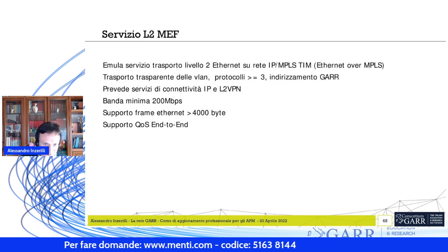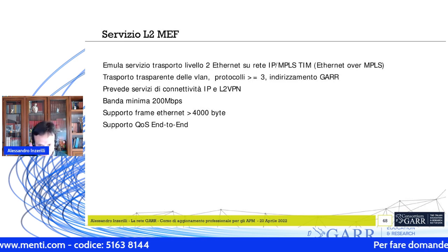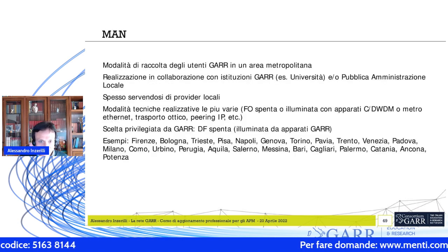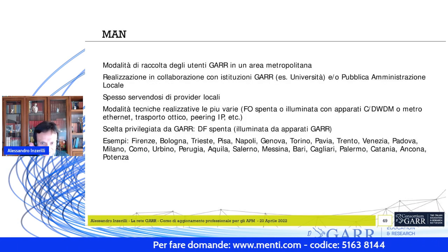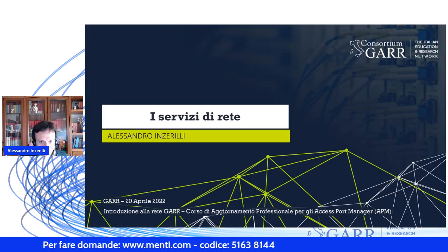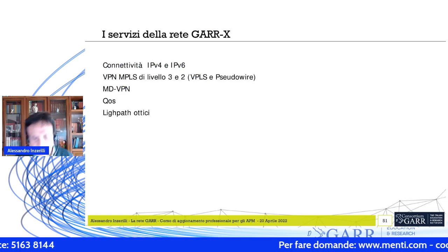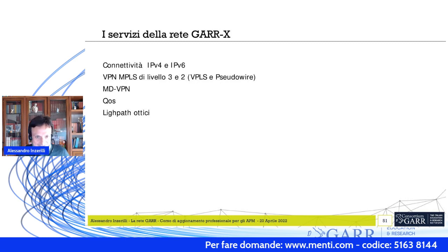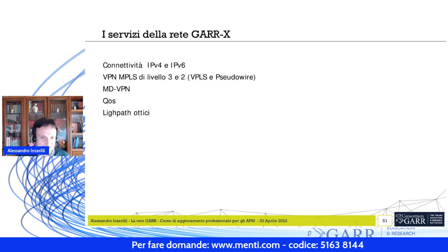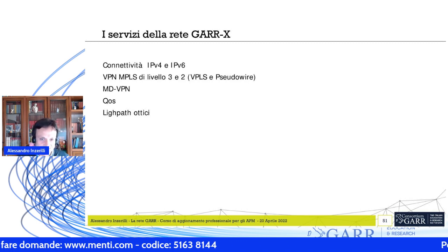Il servizio rispetta lo standard Metro Ethernet Forum e permette il trasporto trasparente di livello 2 su MPLS sulla rete Telecom, con supporto di jumbo frame e qualità del servizio. A livello metropolitano, in molte realtà GAR ha realizzato reti metropolitane, anche in collaborazione con università o istituzioni pubbliche, con varie tecnologie per la raccolta delle sedi utenti.